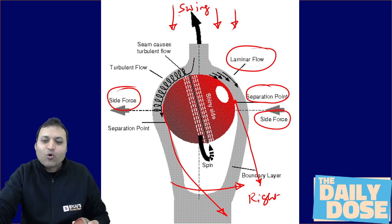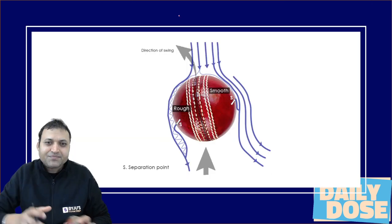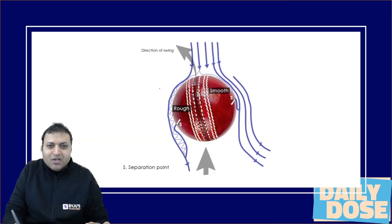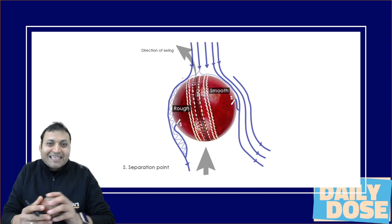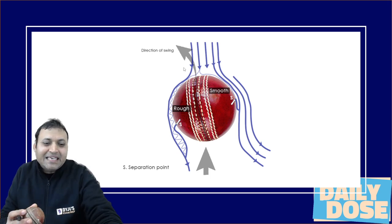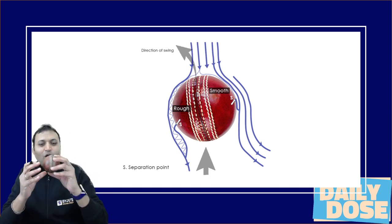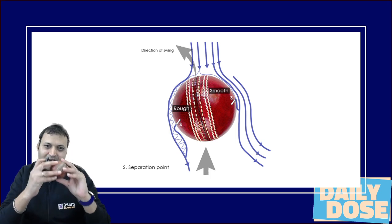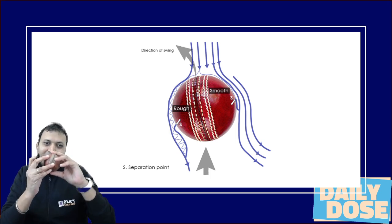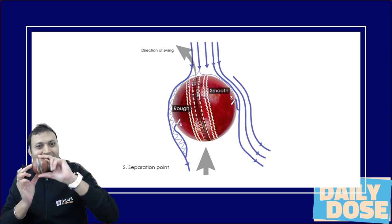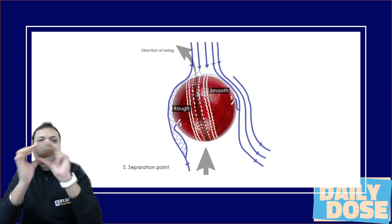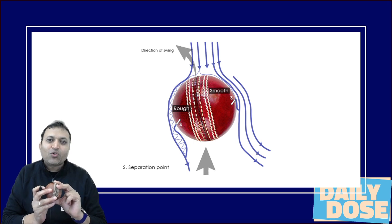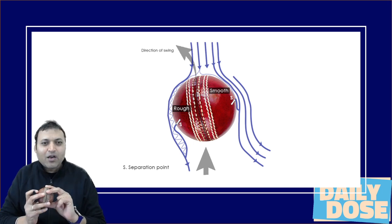That is how it works. The seam of the ball also helps in making the surface rough. The ball always swings towards the rough surface — that is called the swing of the ball.